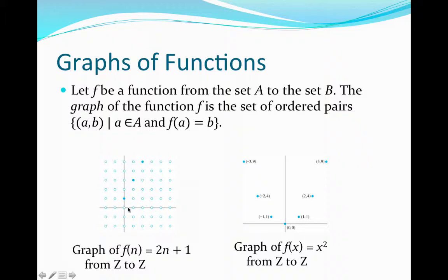There are a number of other images that do not appear in this shrunken graph, but we know that it continues. Similarly, with the function f(x) = x², notice that we're defining it as a function from Z to Z, so we only map integers and their squares. So 0 squared is 0, 1 squared is 1, 2 squared is 4, 3 squared is 9, and we continue for every integer — both positive and negative values. If this was a map from the real numbers to the real numbers, we would join these dots, and this would be the graph of that function.